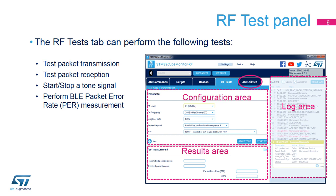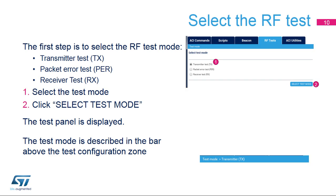The test is performed with two devices — the first one sends the packets, while the second one counts the received packets. The PER is computed based on the number of packets sent versus the number of packets received. To perform an RF test, first select the required RF test: the transmitter test to put the device in emission mode, the receiver test to put the device in receive mode, or the packet error rate test to measure performance. When one option is selected, click Select Test Mode. The selection panel is replaced by the test panel, and the current panel selection is indicated in the blue bar at the top.